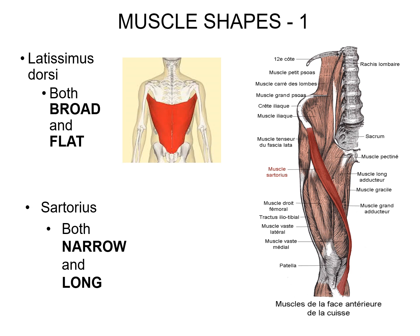Another example of a very cool muscle shape is the sartorius muscle — this highlighted muscle. It starts up near the iliac crest at the top of the ilium bone, crosses the femoral region of the lower extremity, and inserts down at the medial tibial area. So it's a very long, narrow, skinny muscle.